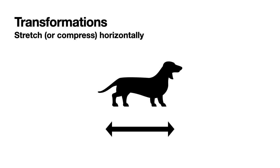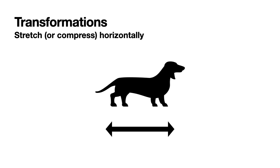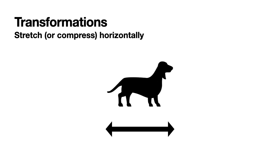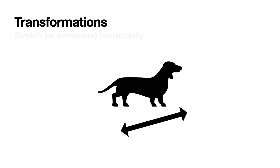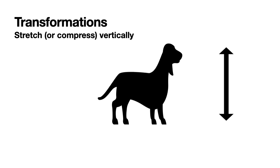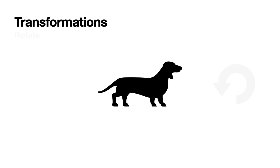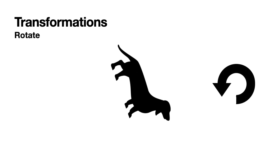First, let's get started with some transformations. Transformations in the plane or in space can be seen as a function that takes points to other points. Some special cases are stretching and compressing. For example, we can stretch an image horizontally or compress it. We can also stretch or compress it vertically. And finally, we can rotate this image by some angle.